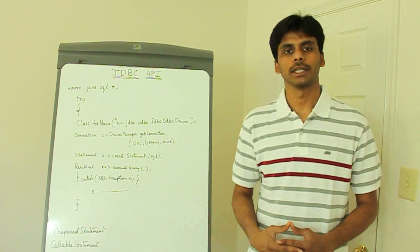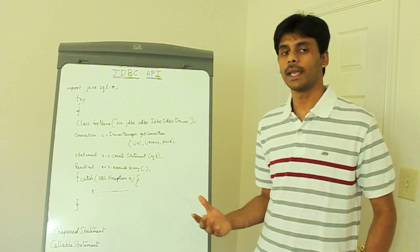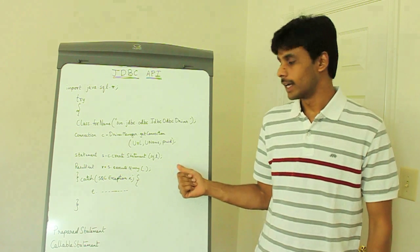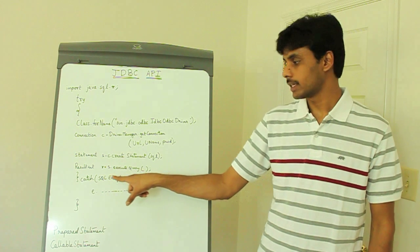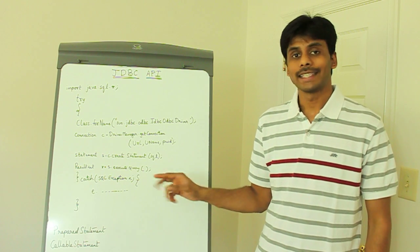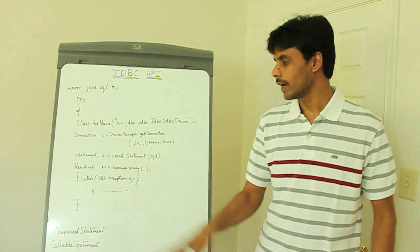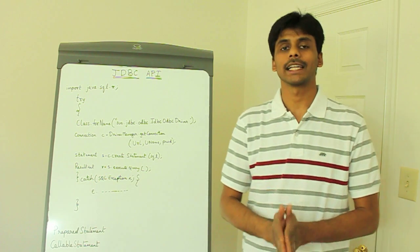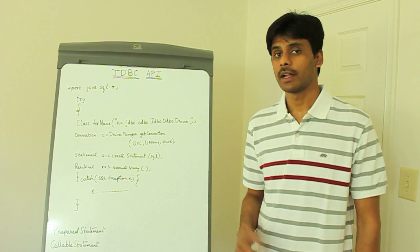Once we have the Connection object, we create a Statement object by passing in the SQL we want to execute. The SQL could be a SELECT query, or a DML statement such as INSERT, UPDATE, or DELETE. For a query, we invoke executeQuery on the Statement object; for a DML statement, we use executeUpdate, which returns an int indicating how many records were updated. For executeQuery, it returns a ResultSet with all the rows satisfying the SELECT query, and you iterate over it to take the appropriate action in your Java code.